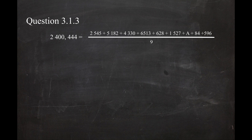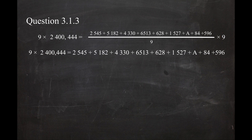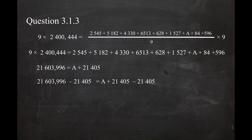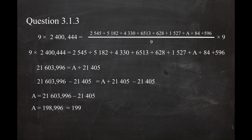To make A the subject of the formula, multiply both sides of the equation by 9 — the 9s on the right side will cancel. Next, simplify by adding the values on the right side of the equation. Then rearrange the equation so that A becomes the subject by subtracting both sides by 21,405. Simplifying results in A being calculated as 198,996, which can be rounded to 199.